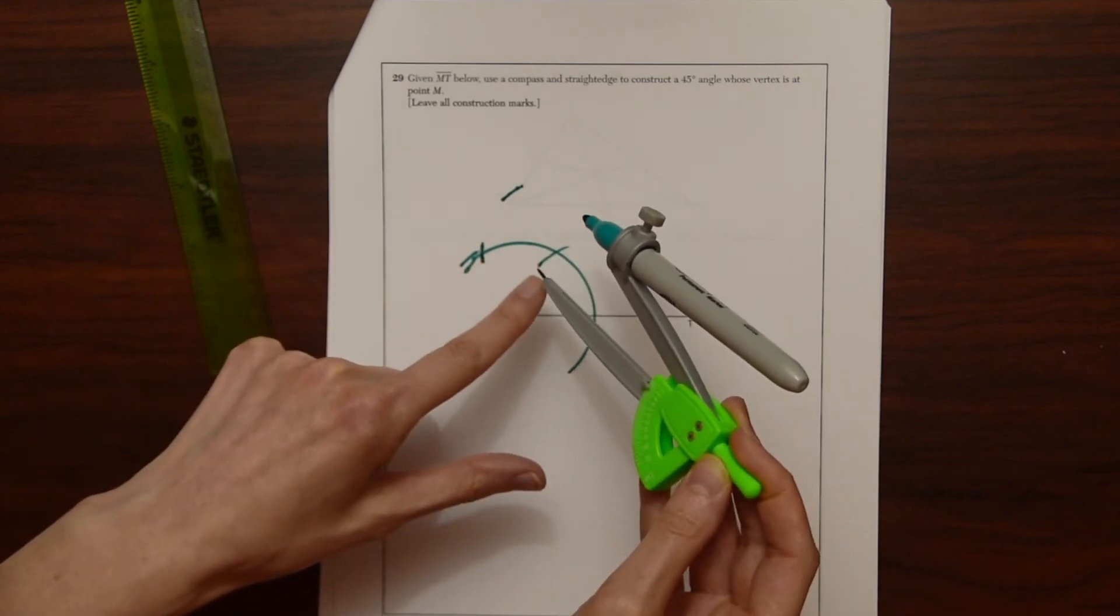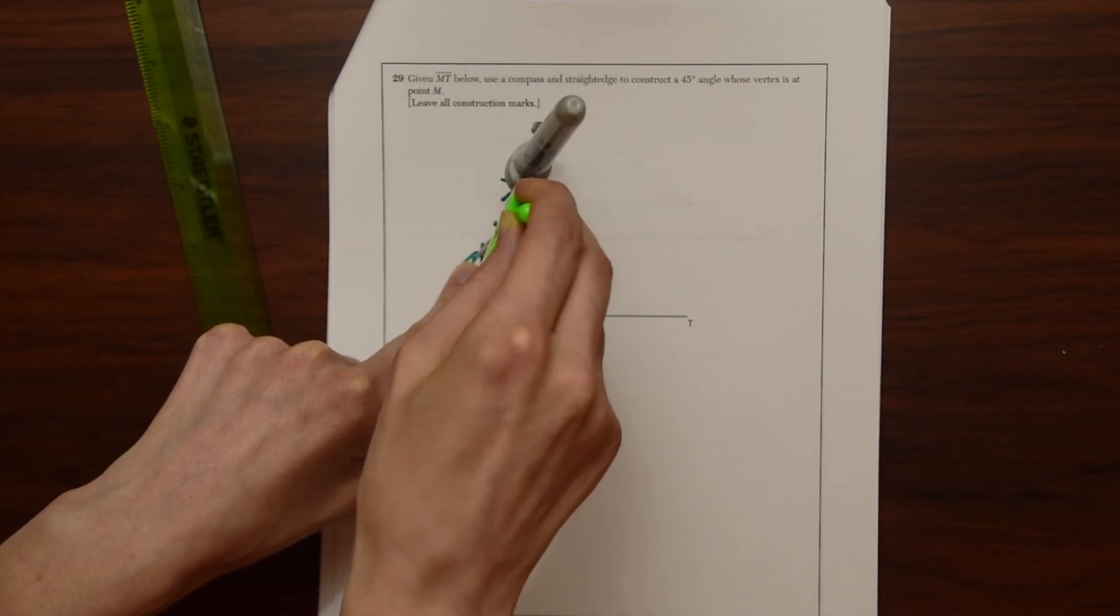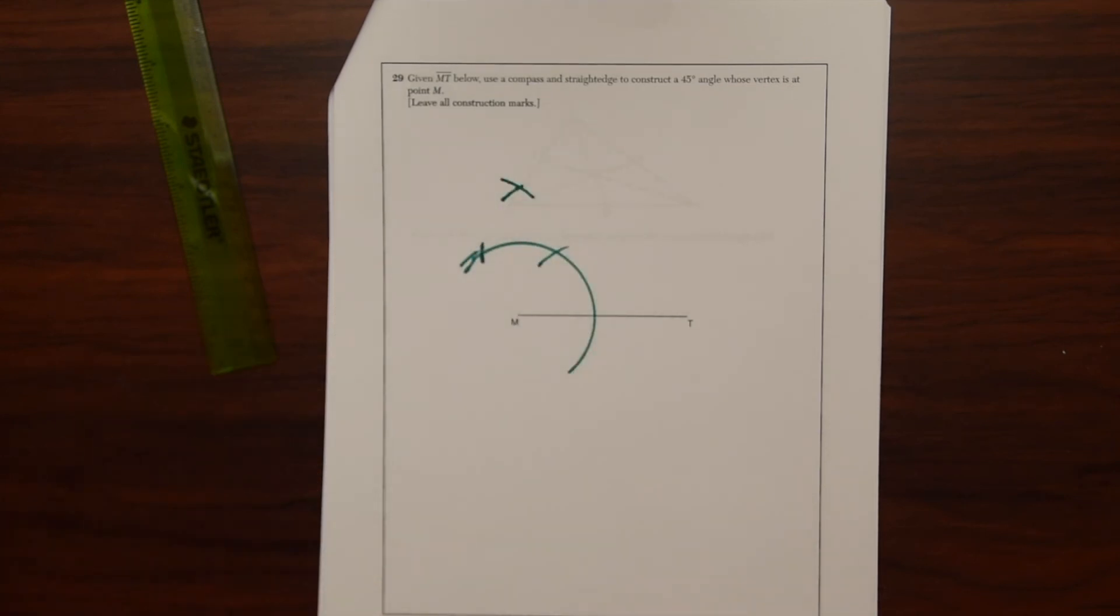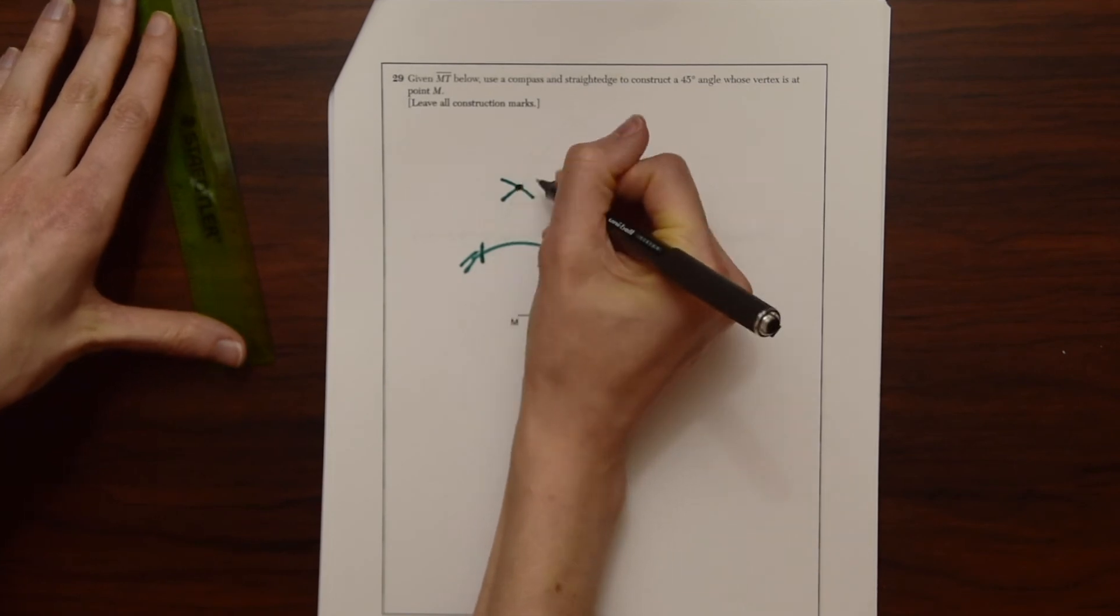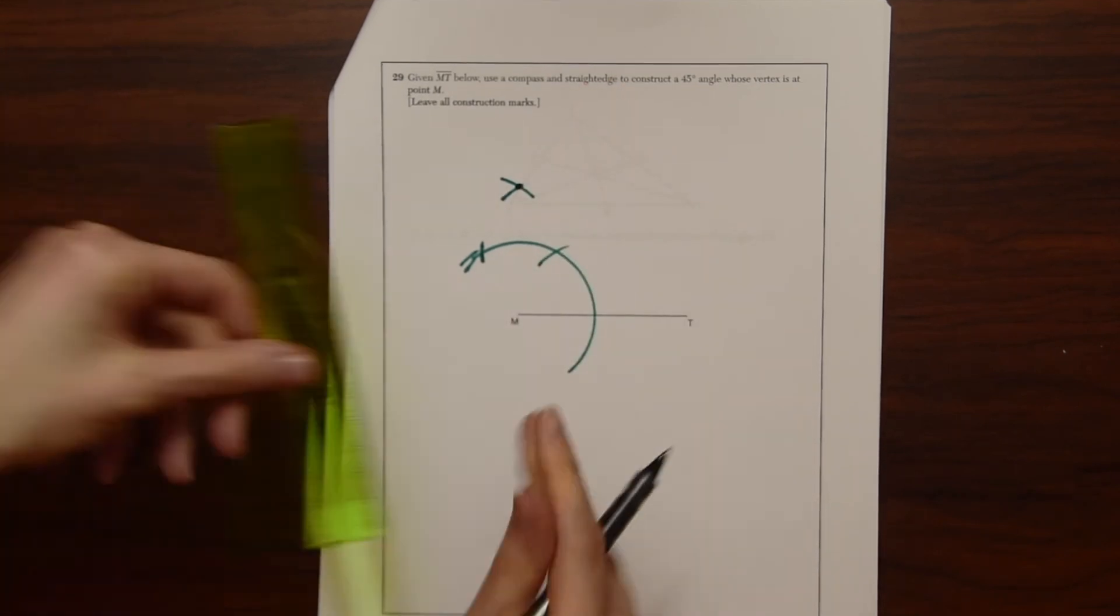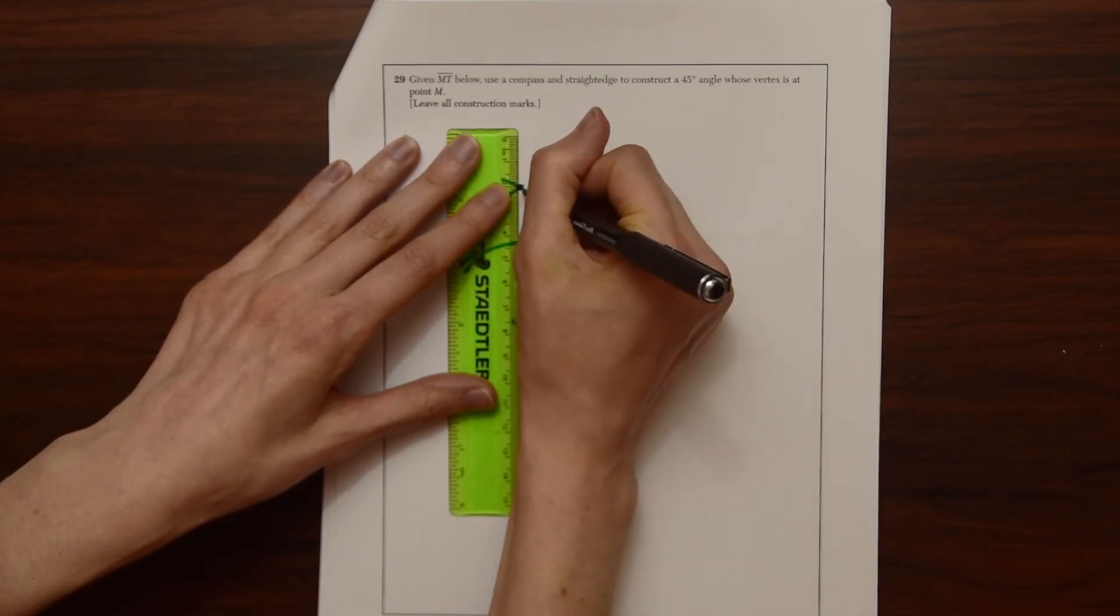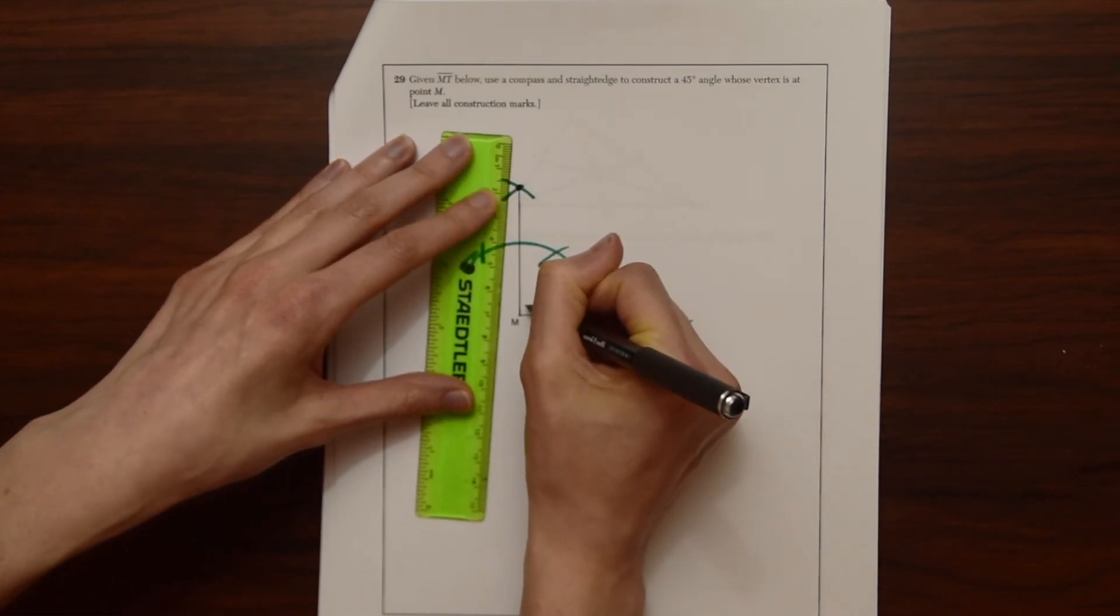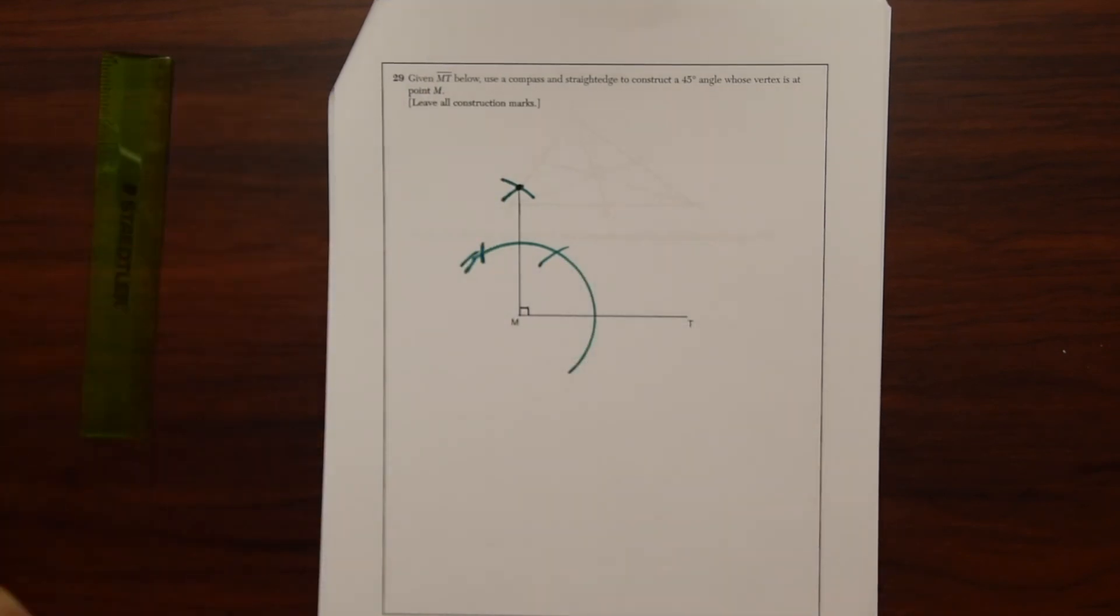Then we're going to bring the edge of our compass to this mark over here, make another mark. And now we're just going to notice these points, these construction points intersect right here. So what we did here is make a 90 degree angle first. So let's connect that. So we have a 90 degree angle, but now we want to split that in half.